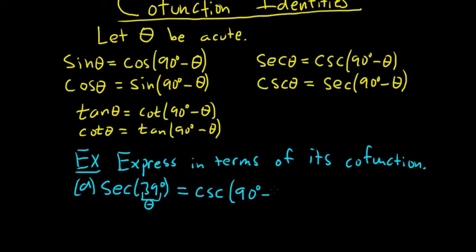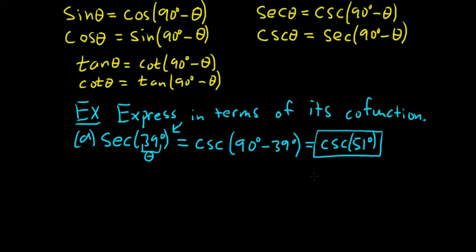So it would be 90 minus theta. So it would be 90 degrees minus 39 degrees. And 90 minus 39 is 51. So it would be cosecant of 51 degrees. And that's it. The secant of 39 degrees is equal to the cosecant of 51 degrees. We leave the answer like this because it says express in terms of its cofunction.